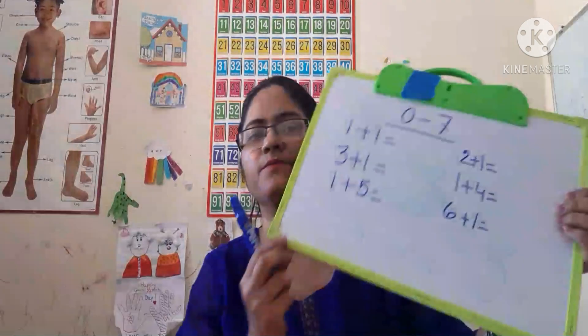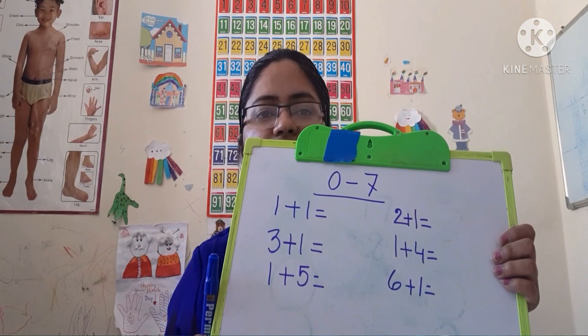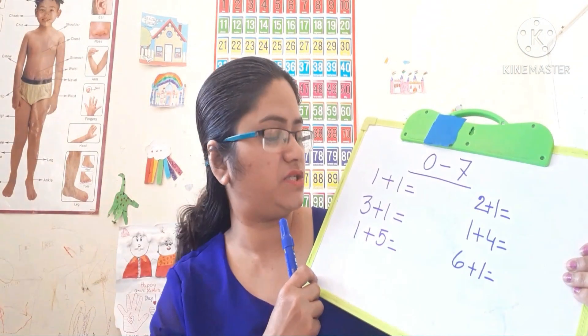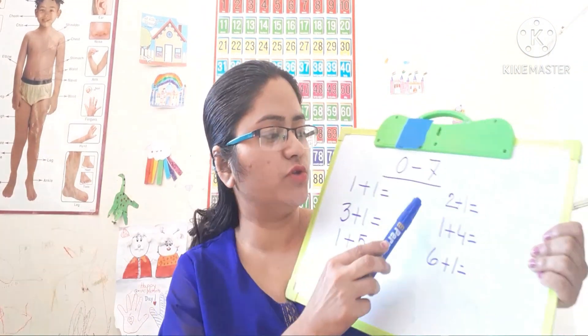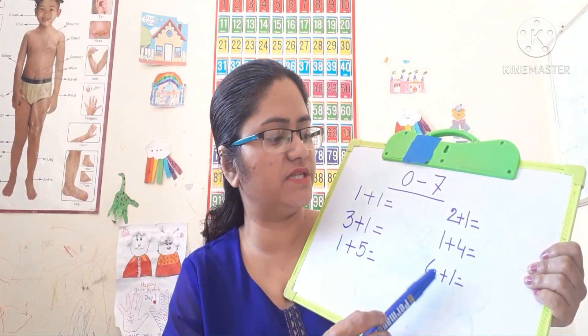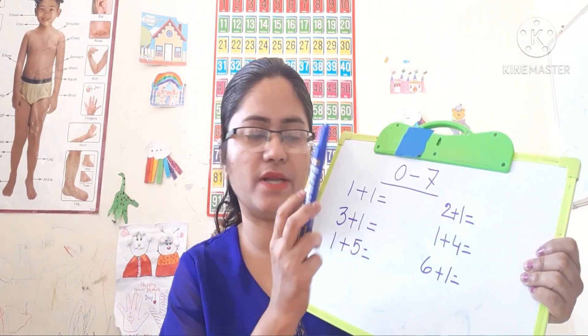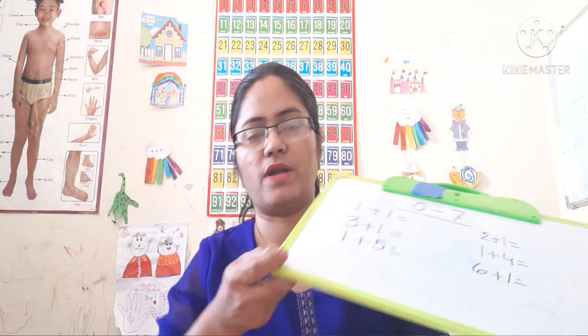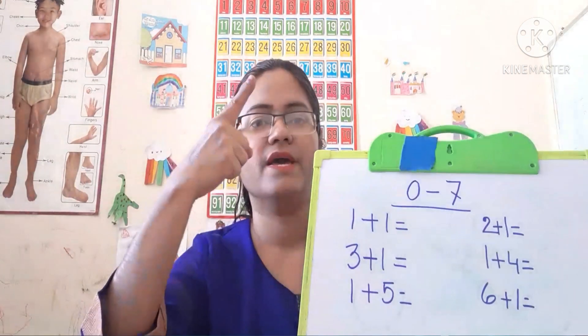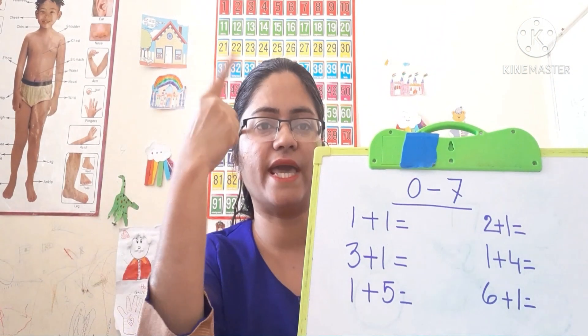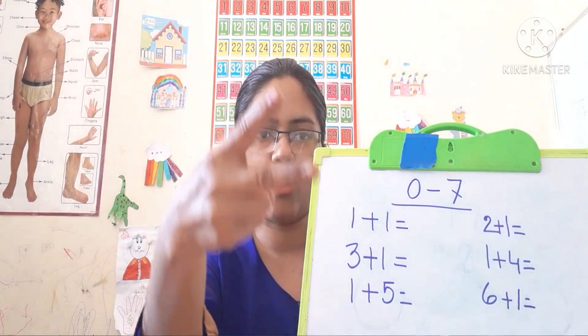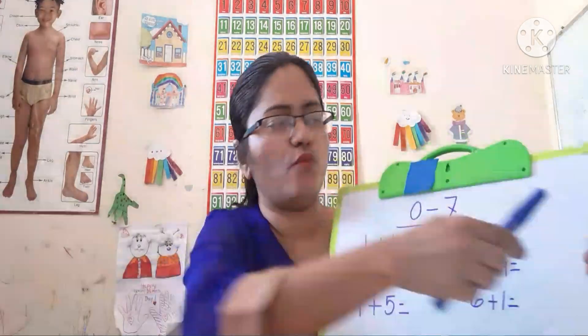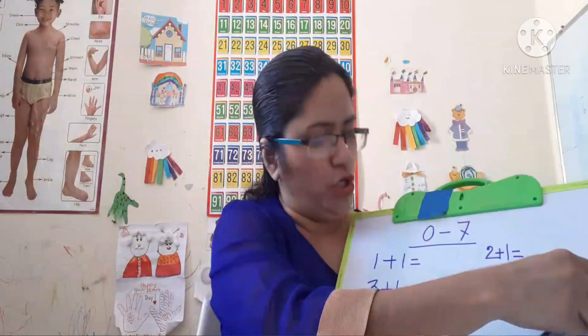Now today I will tell you how you will calculate addition. For example, 1 plus 1: I raise one finger, then again plus 1, I raise one more finger. So how many fingers? 1 plus 1 is equal to 2.